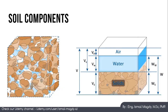Before we start learning the estimation of earthworks, we need to understand the components of any soil. Any soil sample in its natural form consists of three main components: solid particles, water content, and air content. The percentage between those components differs based on each soil type and its form.